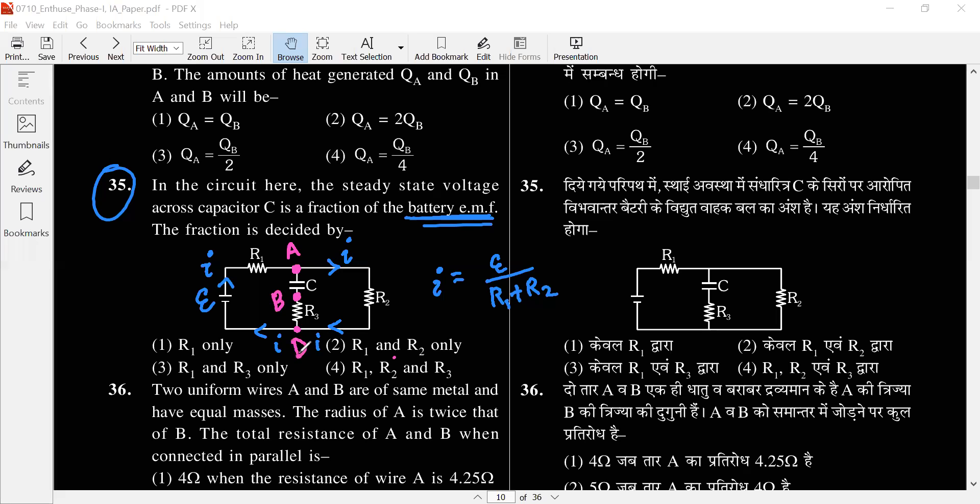So B and D are at the same potential? Can I say that? Yes sir. Why? Sir, there will not be current in R3. Yes, VB is equal to VD because there's no current in R3. So V equals IR is zero. Right? Do you understand?